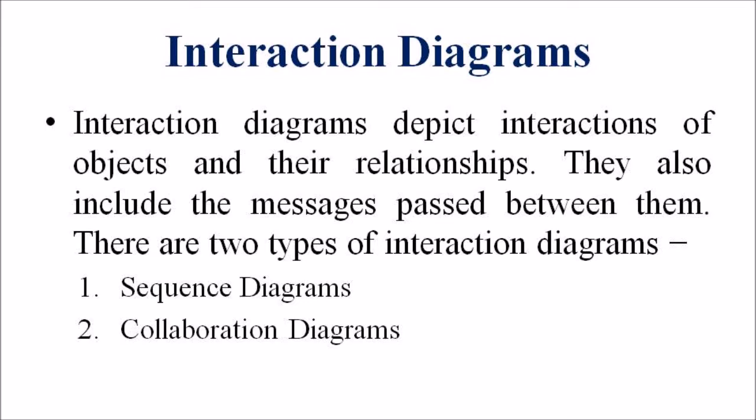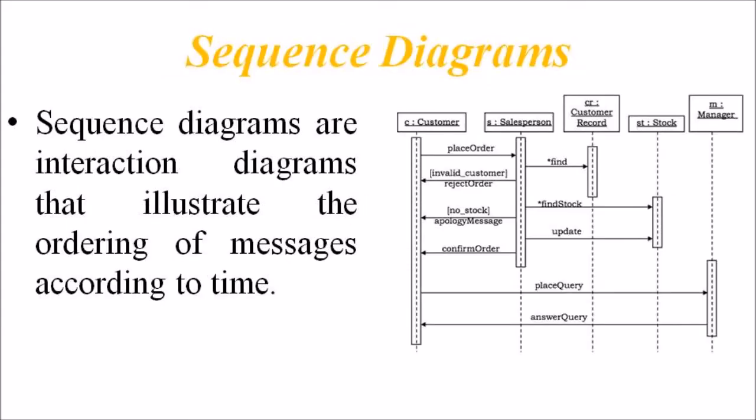When we are coming to the Sequence Diagram, the Sequence Diagrams are Interaction Diagrams that illustrate the ordering of messages according to time. These diagrams are in the form of two-dimensional charts. The objects that initiate the interaction are placed on the x-axis. The messages that these objects send and receive are placed along the y-axis in order to increase the time from top to bottom.